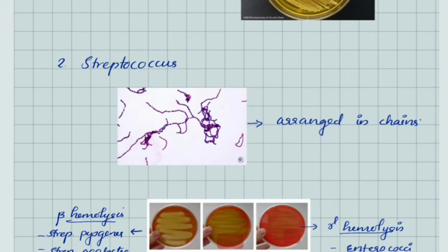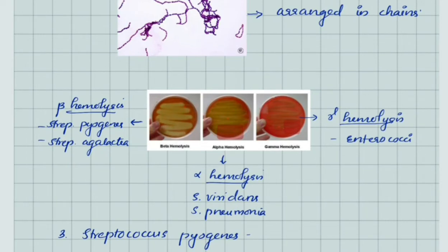Streptococcus in Gram stain shows chain arrangement. On blood agar, Streptococcus species show different kinds of hemolysis.